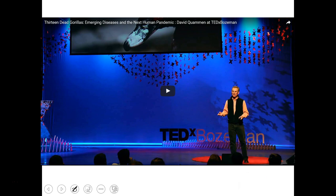There are many kinds of viruses that infect animals. Viruses are typically specific — not all viruses infect all living things. One of the most dangerous has been the smallpox virus, which causes pox lesions that can become infected with bacteria. Smallpox has been largely eradicated and now only exists in the freezers of certain governments, though small outbreaks do occur periodically.